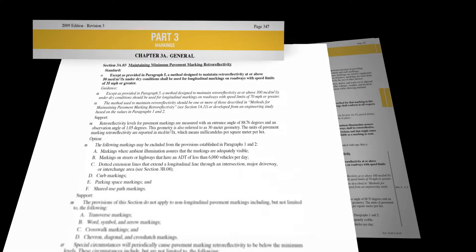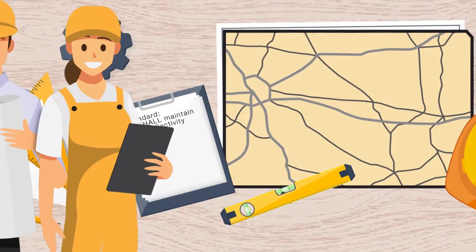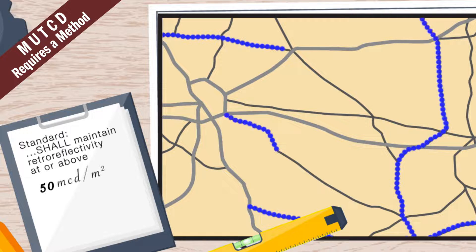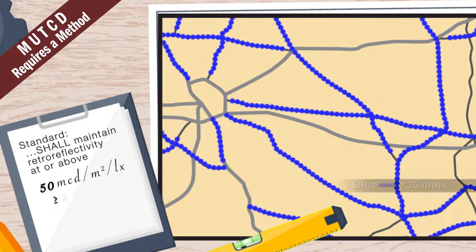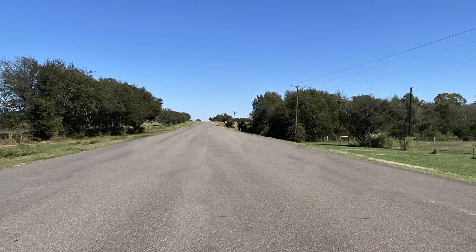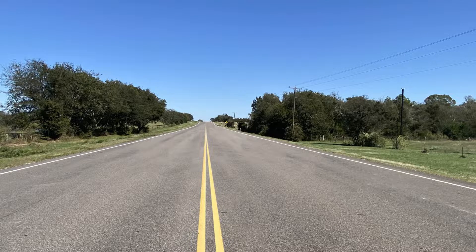Specifically, Part 3 of the Manual on Uniform Traffic Control Devices, or MUTCD, now requires the use of a method to maintain retro-reflectivity at or above 50 millicandelas per meter squared per lux on roadways with speed limits of 35 miles per hour or greater. This applies to longitudinal markings such as center lines, edge lines, and lane lines.